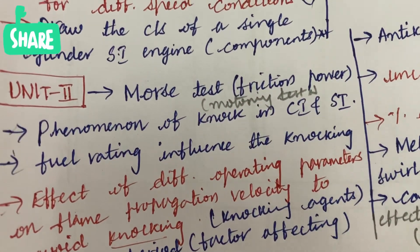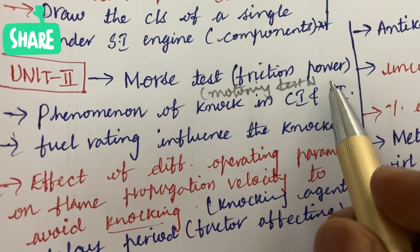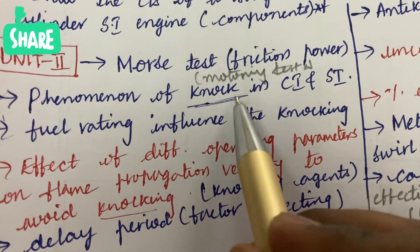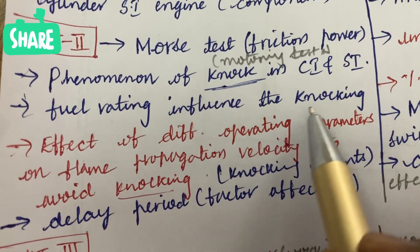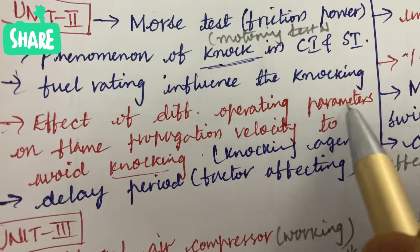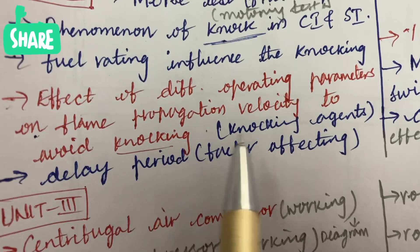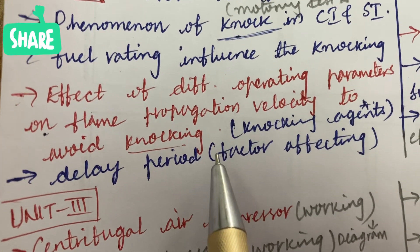Unit 2 is all about the Morse test and the motoring test, is the friction power phenomenon of knock in CI and SI engine. Related to knocking, you will be getting for sure one gunshot question. Fuel rating influences the knocking and the effect of different operating parameters on flame propagation velocity to avoid knocking. What are the different knocking agents related to knocking? You are going to get one question for sure.